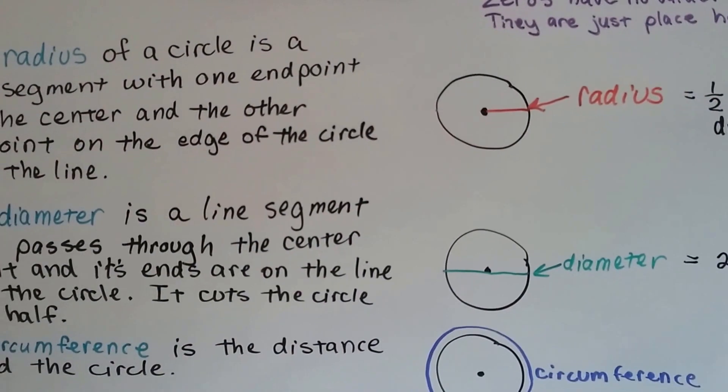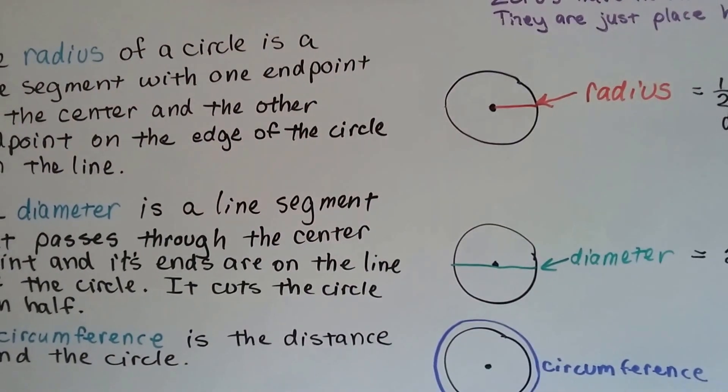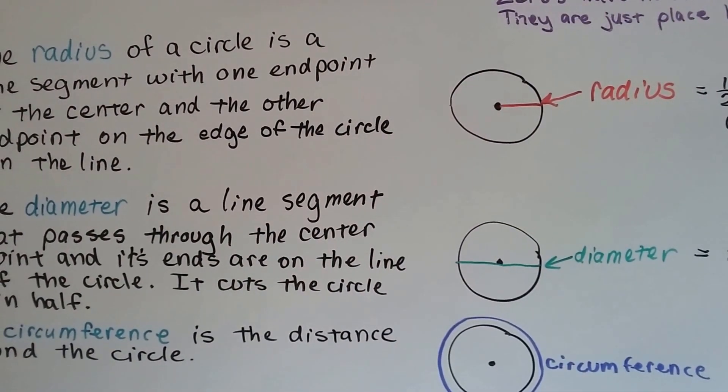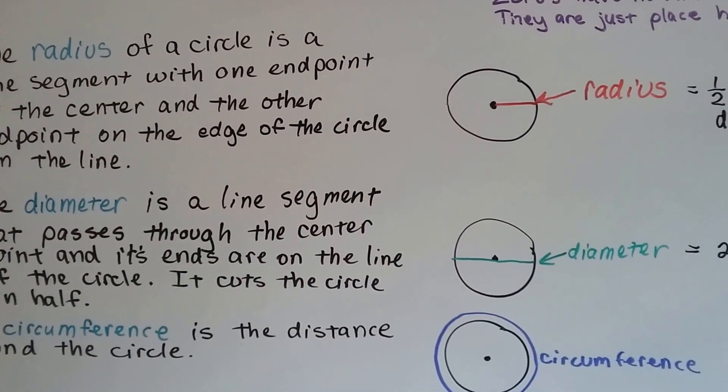And do you remember that the diameter is a line segment that passes through the center point and its ends are on the line of the circle and it cuts the circle in half? See the green diameter?